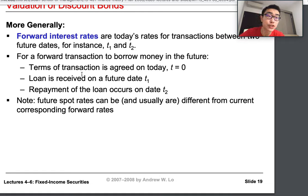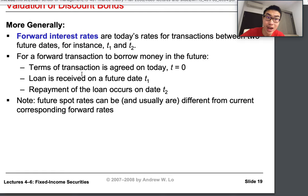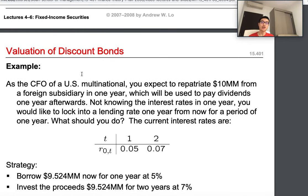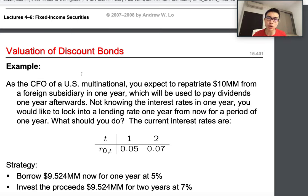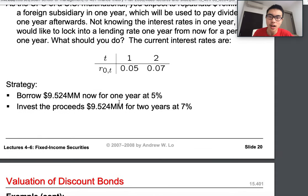Even if we don't know the interest rate, we can use prices to find it: for instance, P_(0,2) divided by P_(0,1) gives us the spot rate. This is how we value a discount bond. We also introduced the forward rate concept — for future transactions, we determine the loan terms today, agreeing on the interest rate, loan duration, and repayment terms. You're making a lot of decisions right now for transactions that will happen in the future.